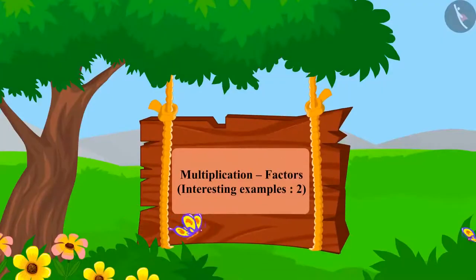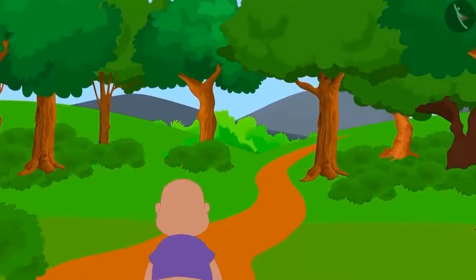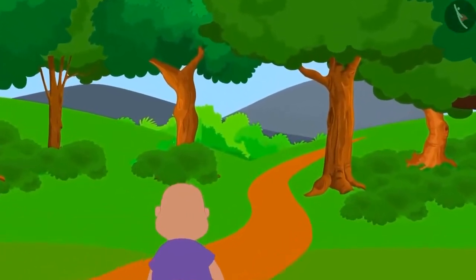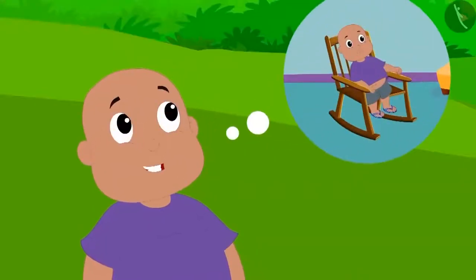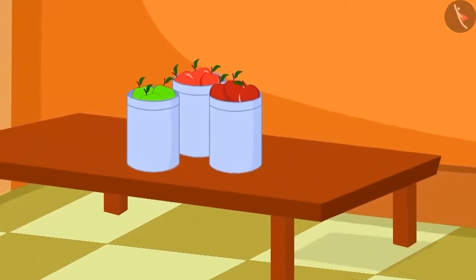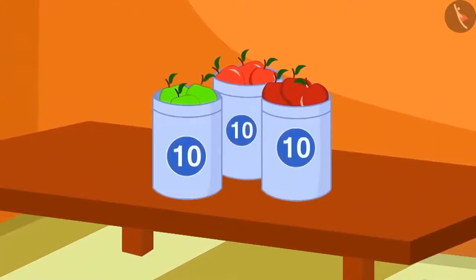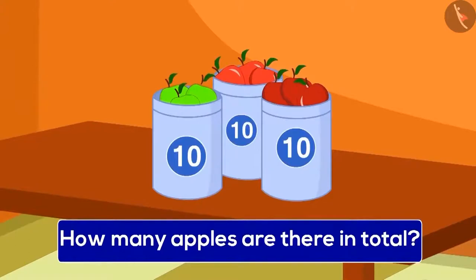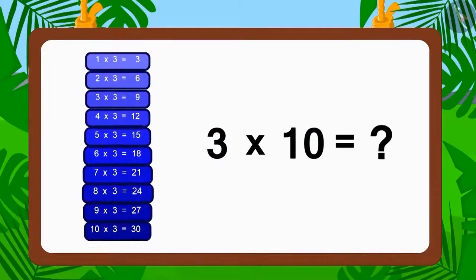Children, in this lesson we will learn the use of factors by multiplication. Babalu is very naughty. One day while roaming, he reached another village and went inside a big house. There he saw three boxes on a table with ten apples in each box. Three multiplied by ten — using the table of three — gives thirty apples in total.